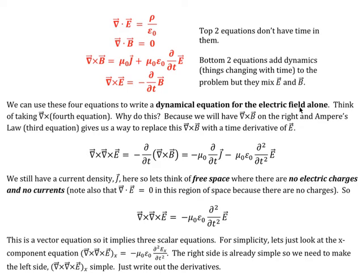So what we're going to do is use these equations to write a dynamical equation, one that has time, for just one of the fields. So just the electric field. So how are we going to do that? Well, think of this fourth equation and take del cross this equation. So del cross, del cross E on one side, and del cross minus d/dt of B on the other. The reason I want to do that is because I can switch the spatial and the time derivatives.